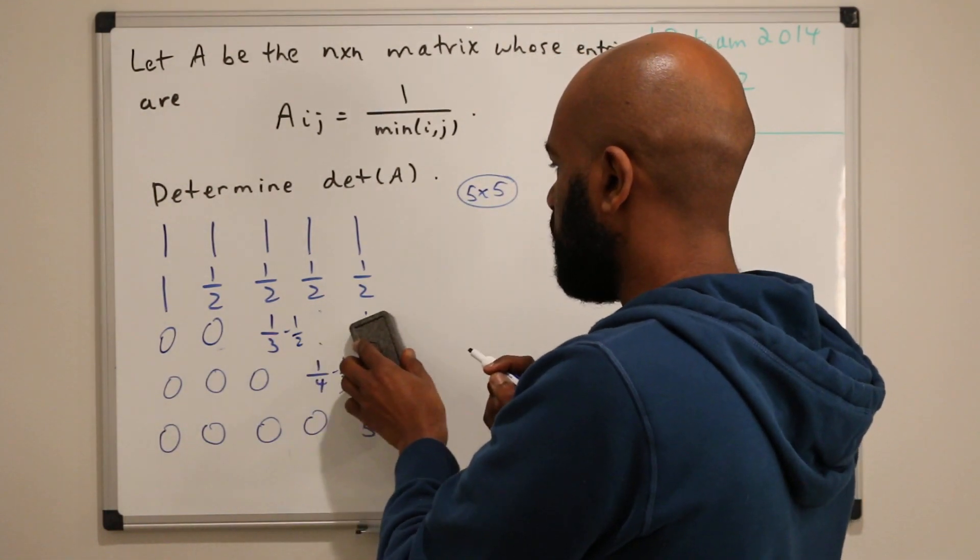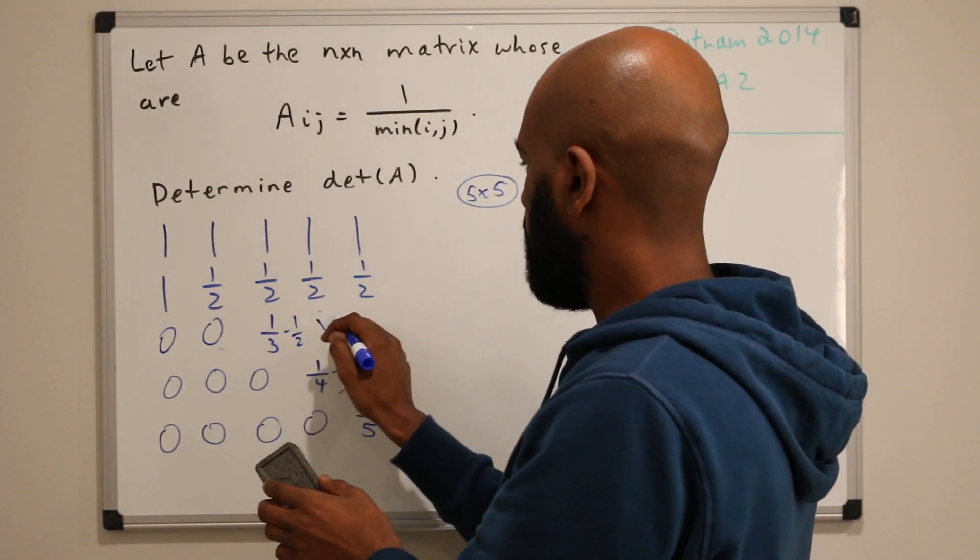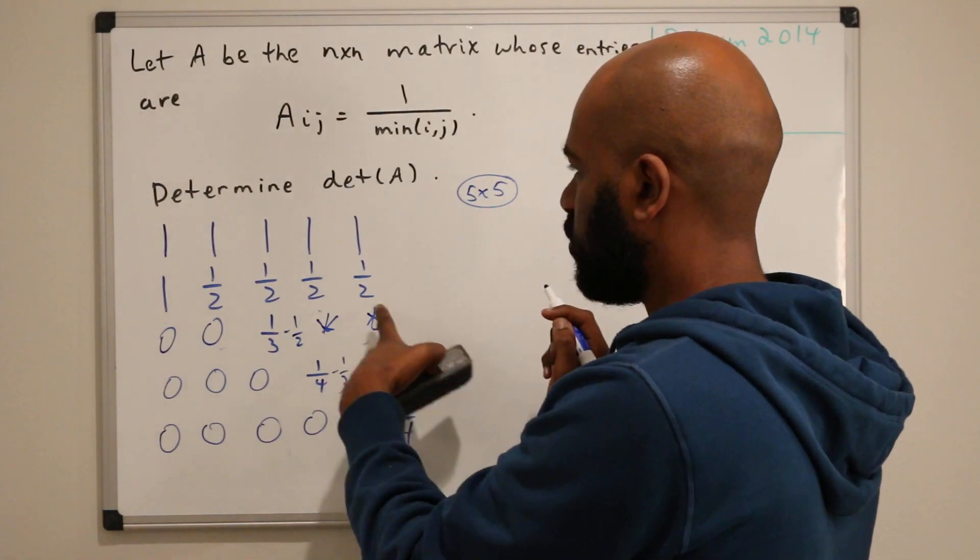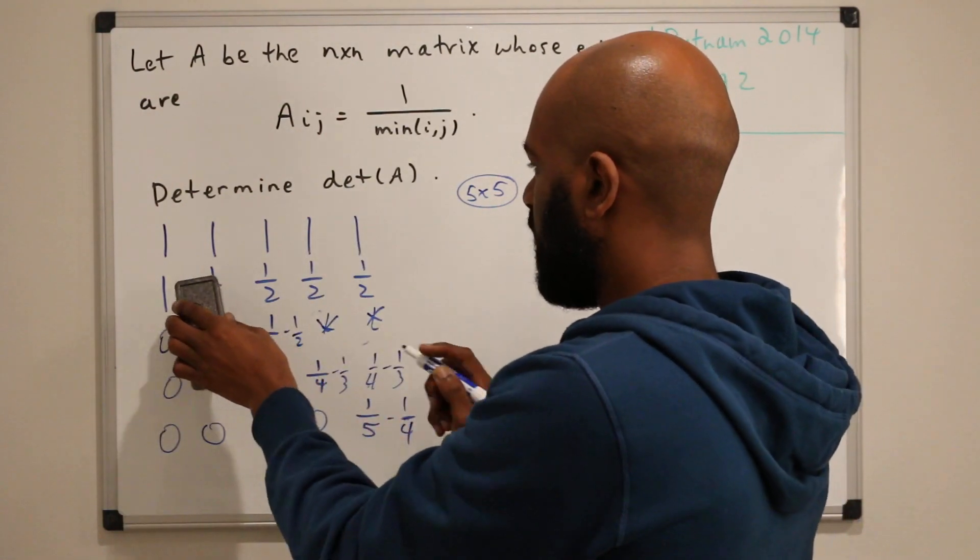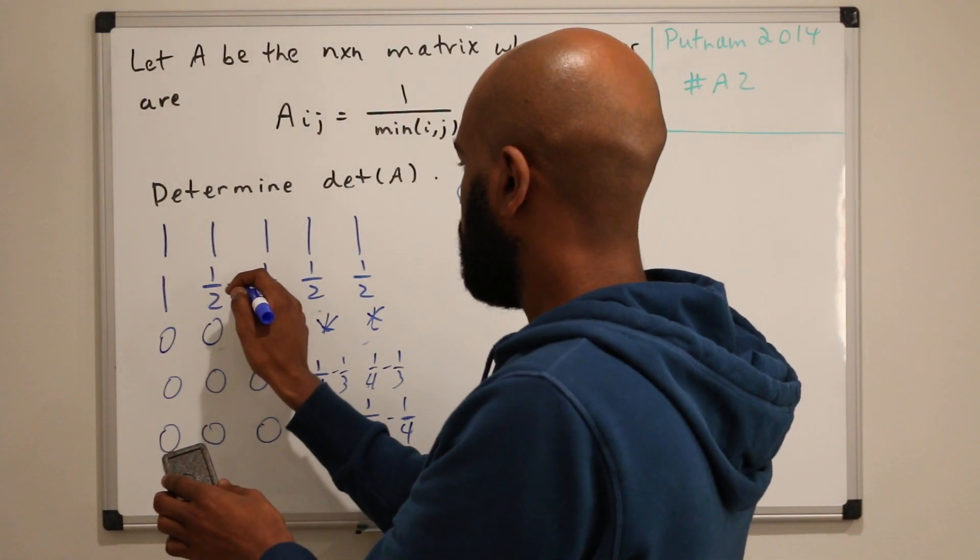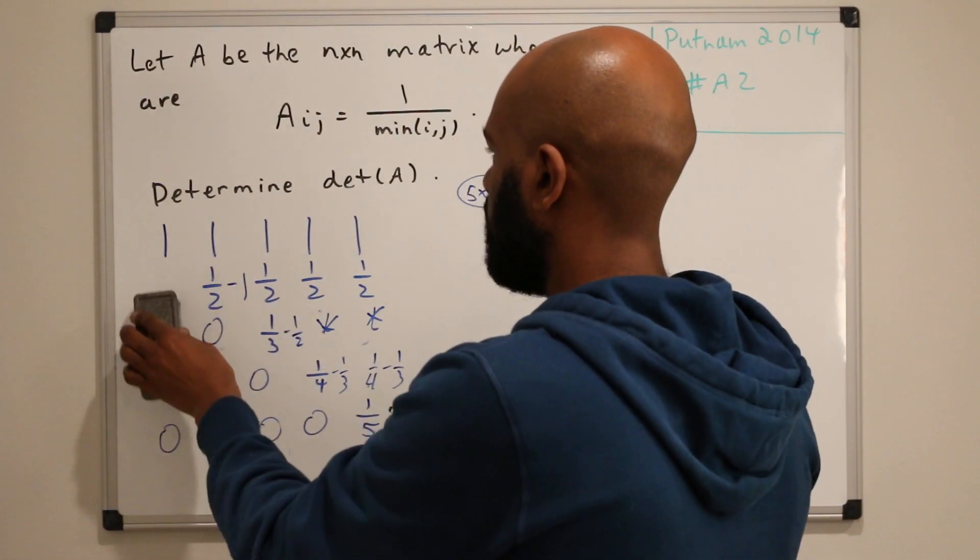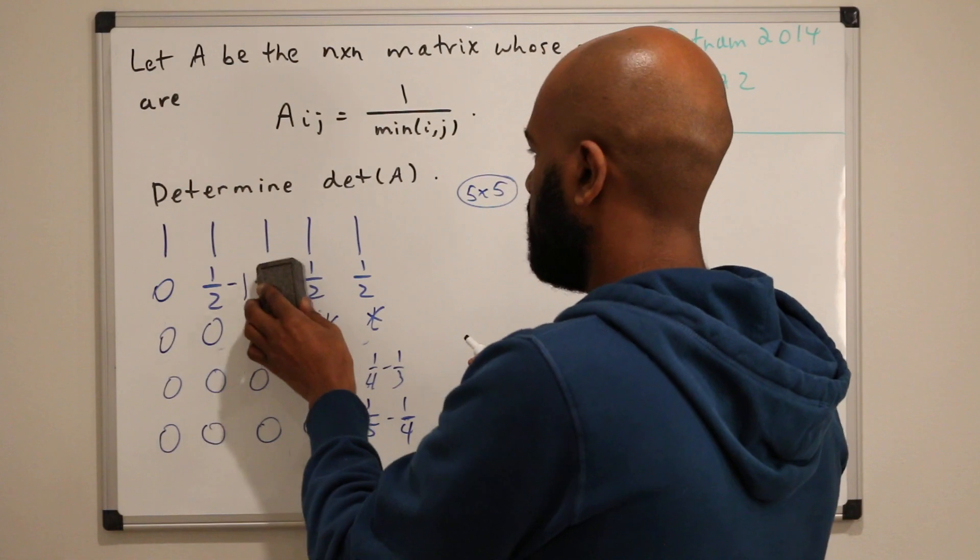And then some stuff over here, but we don't really care what it is because eventually this is going to be upper triangular and we'll be fine. So continuing in that same manner, we'll have a half minus one here, a zero, and then some stuff.